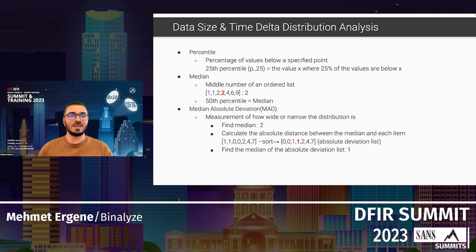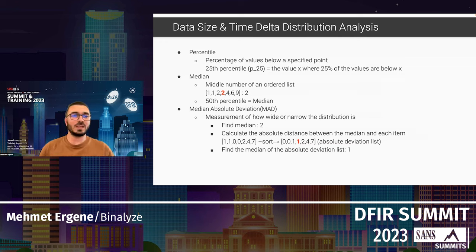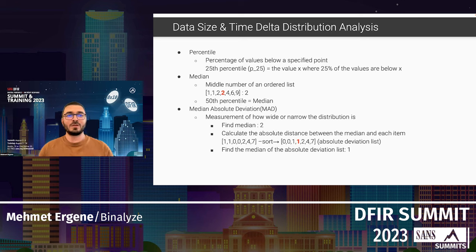For a median, you take the middle item from an ordered list. If there's an even number of items, you take the two middle numbers and average them. Importantly, the 50th percentile equals the median. The third term is Median Absolute Deviation.